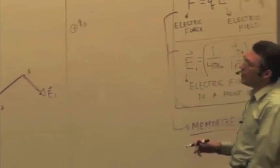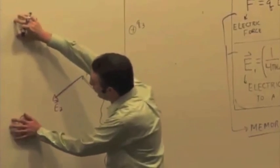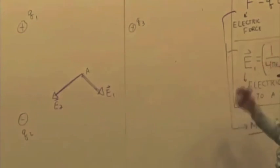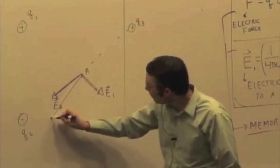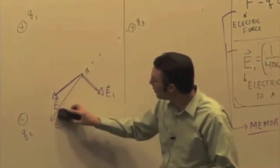And then Q3, we'd have to ignore Q1 and Q2, treat it as if only Q3 were around to find the electric field due to Q3 and that would be pointing away from it, kind of like that maybe. So that's E3.